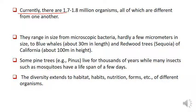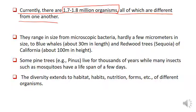Currently, there are 1.7 to 1.8 million organisms. आज इस world में about 1.7 to 1.8 million organisms हैं, all of which are different from one another. जैसे कि आपका pen जो है coffee से different है, और pen में भी बहुत सारे types हैं, coffee में भी बहुत सारे types हैं — ठीक उसी तरह से organisms में भी बहुत सारी विभिन्नताएं हैं.